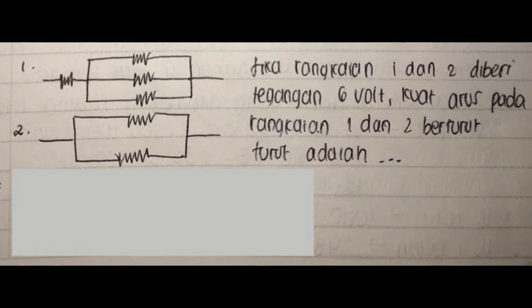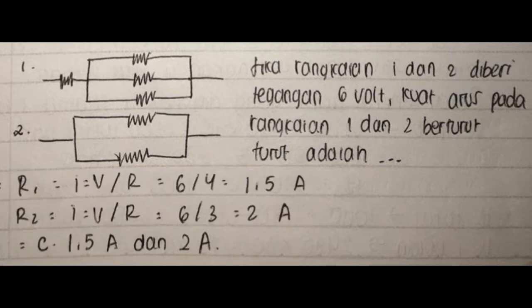Soal 7: Jika rangkaian 1 dan 2 diberi tegangan 6 volt, kuat arus pada rangkaian 1 dan 2 berturut-turut adalah? Jawaban: R1: I sama dengan V per R sama dengan 6 per 4 sama dengan 1,5 ampere. R2: I sama dengan V per R sama dengan 6 per 3 sama dengan 2 ampere.